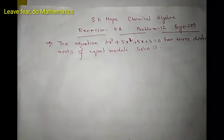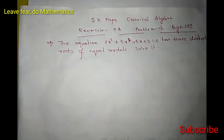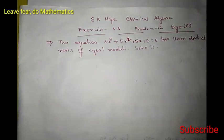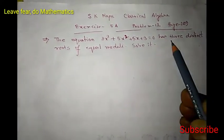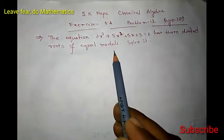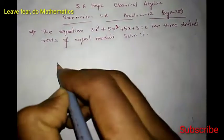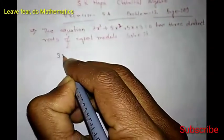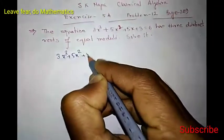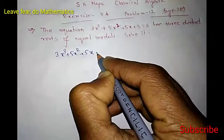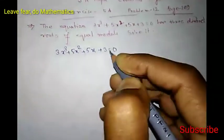The problem says: the equation 3x³ + 5x² + 5x + 3 = 0 has three distinct roots of equal modulus. Our given equation is 3x³ + 5x² + 5x + 3 = 0.